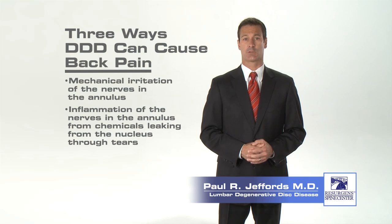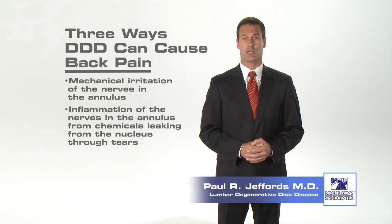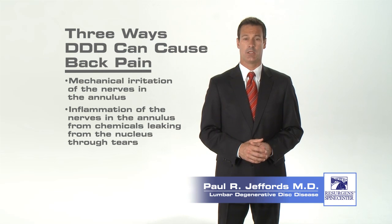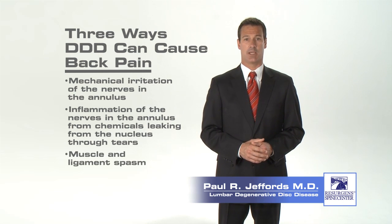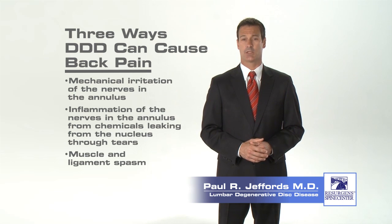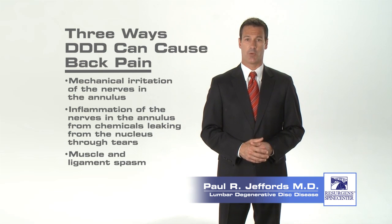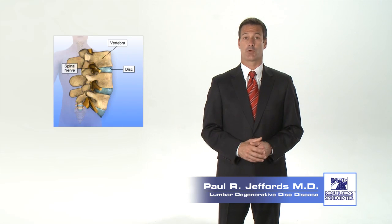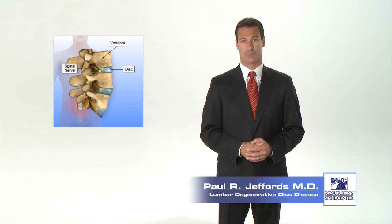The inflammation and pain associated with a degenerated disc can also cause the muscles and ligaments that lie on top of the spine to become inflamed, and as a result, the muscles and ligaments can begin to tighten and spasm, leading to additional symptoms. The pain associated with degenerative disc disease is usually felt as low back pain that often radiates into the buttocks and upper thighs. As the degeneration progresses, the disc continues to flatten and provides less and less shock absorption.